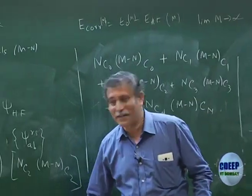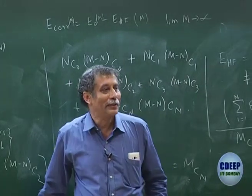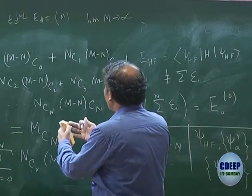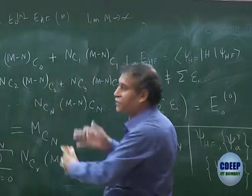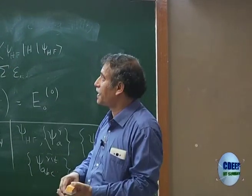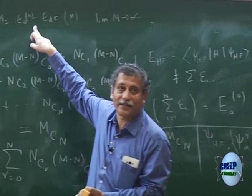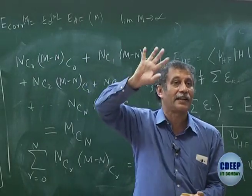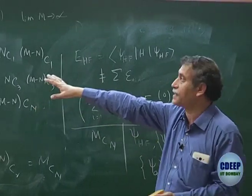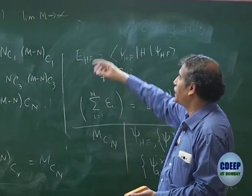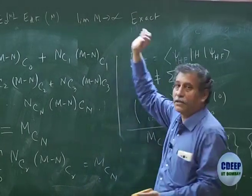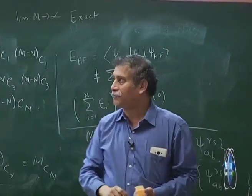What we are now saying is that CI is nothing but taking a linear combination of all such determinants — that is your full CI — and you get what is called the exact function and exact energy in this M basis. Of course, we are never getting anything truly exact; whenever I say exact, it is in a basis. In the limit M → ∞, it will approach exact.